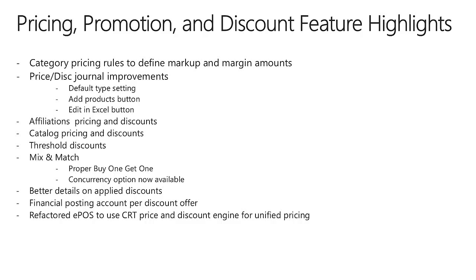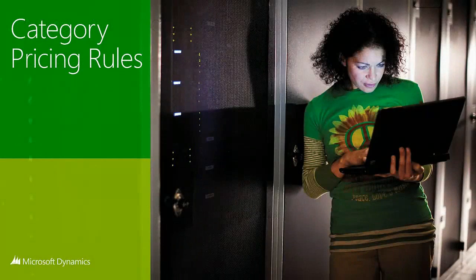Also in AX 2012 R3, Enterprise POS, Modern POS, Online Stores, and Call Center will all use the same price and discount engine for unified pricing. This is nice because you'll have the same code calculating the price for all of the items in all of the channels. Category-based rules allow users to define how sales prices will be updated and then generate a trade agreement from those rules.